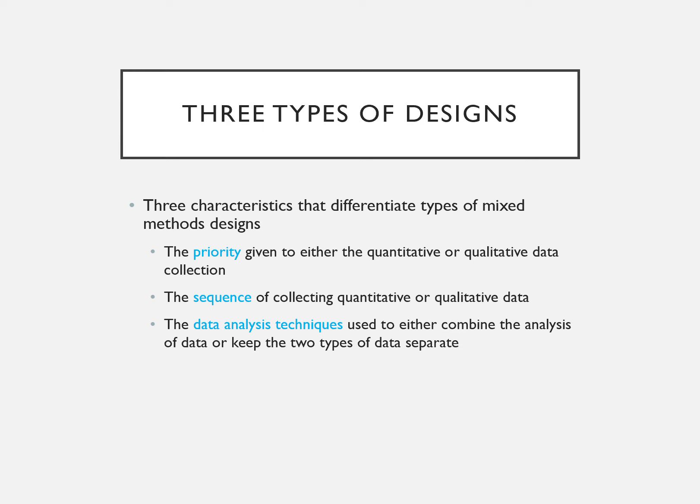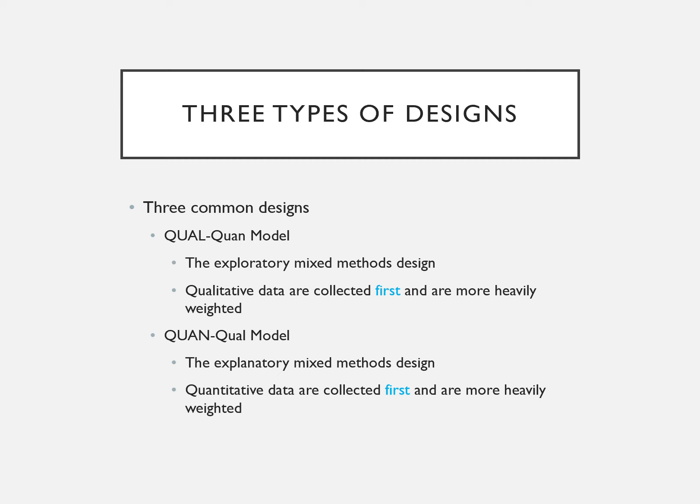There are three types of mixed method design, characterized by: the priority given to quantitative or qualitative, the sequence, and the data analysis techniques. The first type is QUAL → quant, where qualitative is heavily weighted and quantitative is the minor part. The second is QUAN → qual, the explanatory mixed method design, where quantitative data is collected first and more heavily weighted.